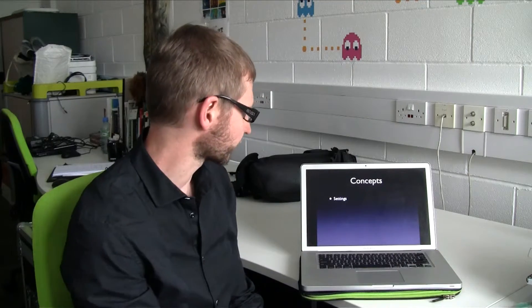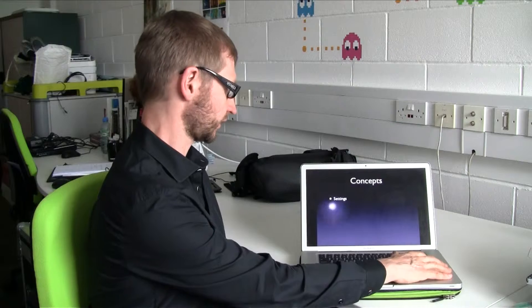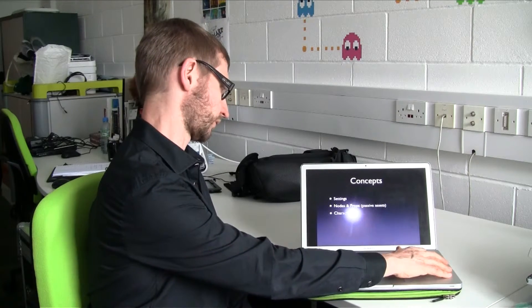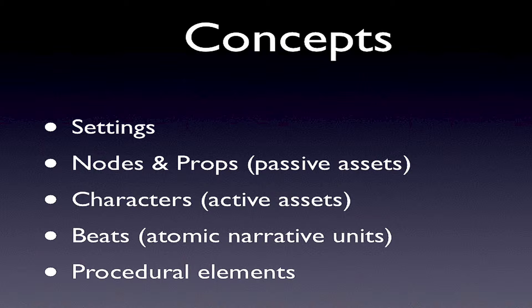The overall concept involves dividing an interactive narrative into four different high-level categories: settings, nodes, and props as basically passive assets, and characters as active assets, and then the concept of beads. Beads are atomic narrative units, and on top of that there are also procedural elements in ASAPS.